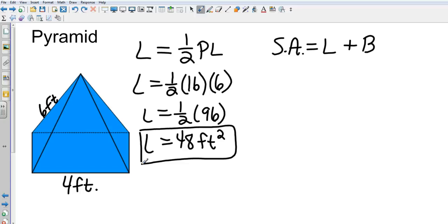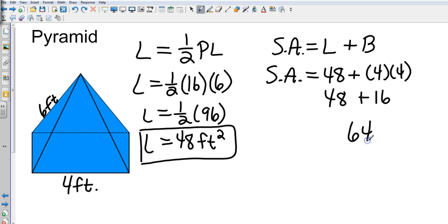So now to go surface area, we are going to sub in our lateral area, which is 48. And then the capital B in this case is the area of the base, which just so happens to be 16 as well, because we would take 4 times 4 to find the area of that square base. So that's going to be 48 plus 16, which gives us a surface area of, and in this case, it's exact, it's not approximate, so it's equal to 64 square feet.